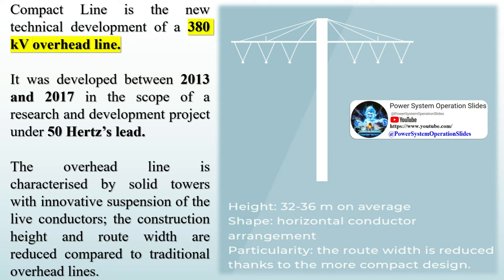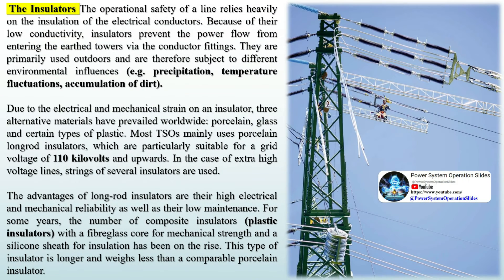The operational safety of a line relies heavily on the insulation of the electrical conductors. Because of their low conductivity, insulators prevent the power flow from entering the earthed towers via the conductor fittings. They are primarily used outdoors and are therefore subject to different environmental influences such as precipitation, temperature fluctuations, and accumulation of dirt. Due to the electrical and mechanical strain on an insulator, three alternative materials have prevailed worldwide: porcelain, glass, and certain types of plastic. Most TSOs mainly use porcelain long-rod insulators, which are particularly suitable for a grid voltage of 110 kV and upwards.